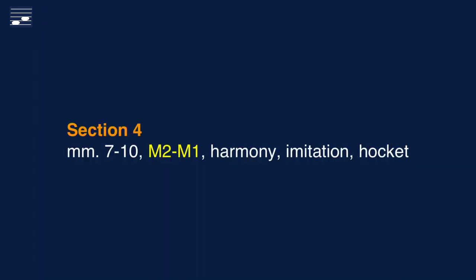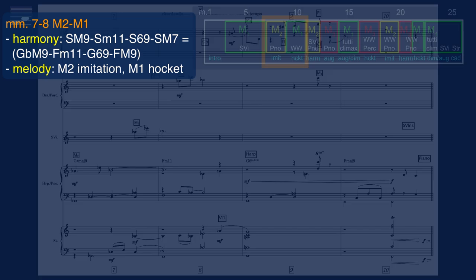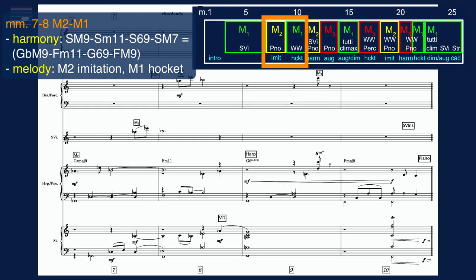Measures 7 to 10 present M2 and M1 in succession, and you'll hear the effect of the harmonization, imitation and hocket.